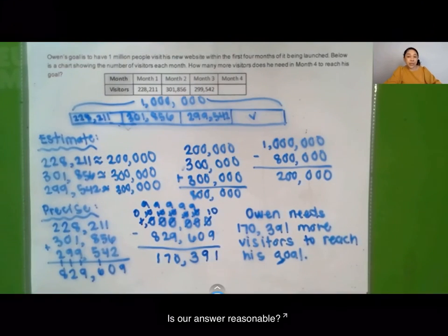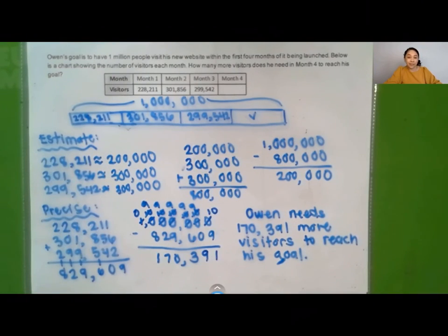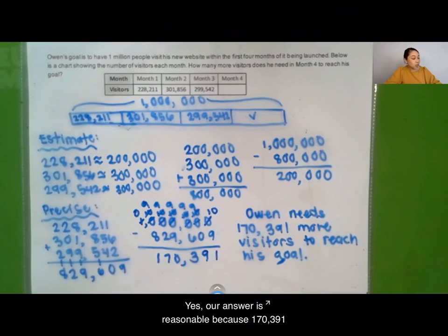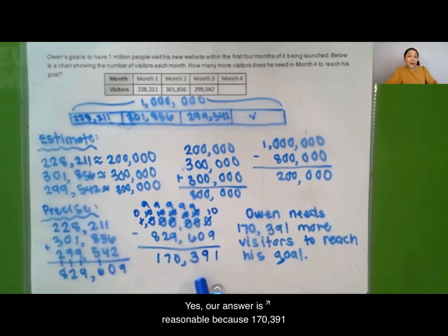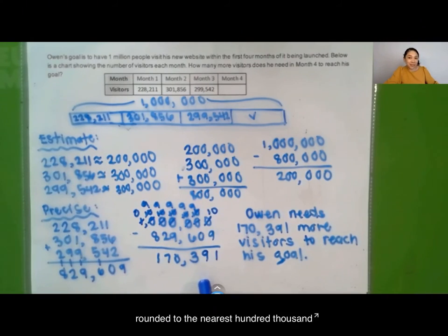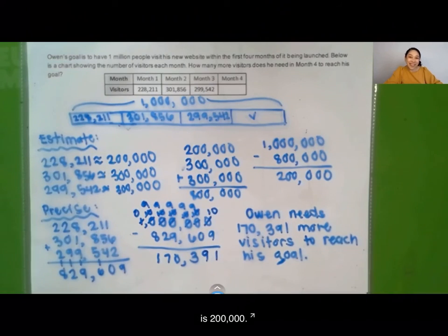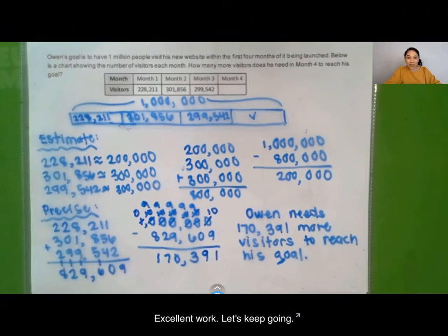Let's compare our precise solution with our estimate. Is our answer reasonable? Yes, our answer is reasonable because 170,391 rounded to the nearest hundred thousand is 200,000. Excellent work — let's keep going.